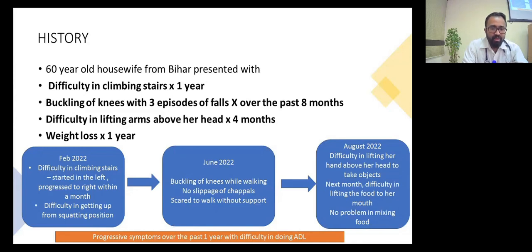Her complaints started in February 2022 when she developed difficulty climbing stairs, initially on the left progressing to the right within a month. In June she noted intermittent buckling of knees and was scared to walk without support, though there was no slipping of chappals. By August she had difficulty lifting her hands above her head to take objects and lifting food to her mouth, but no problem mixing food. Her symptoms progressively worsened over the past year, resulting in difficulty with activities of daily living.